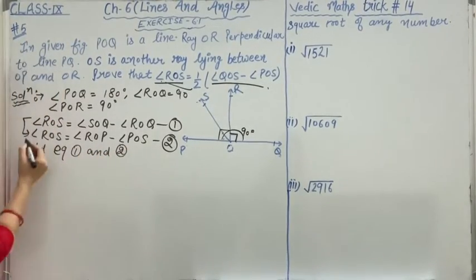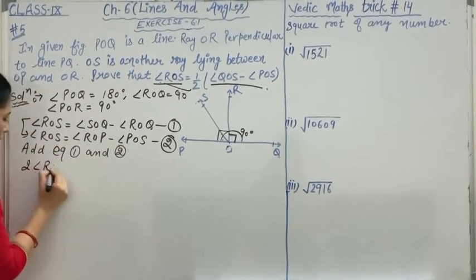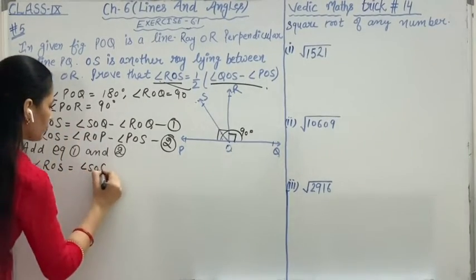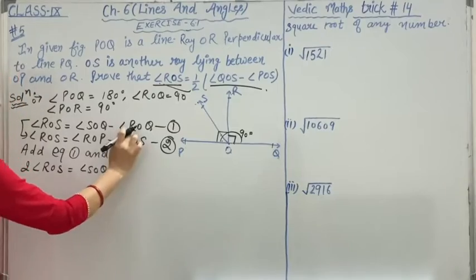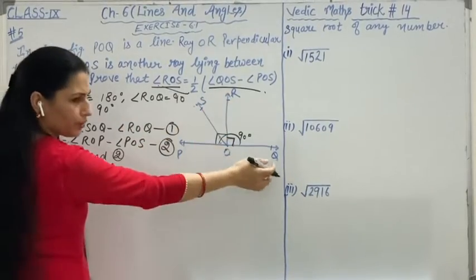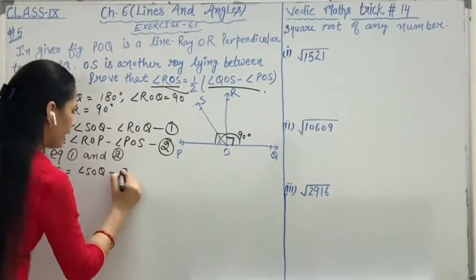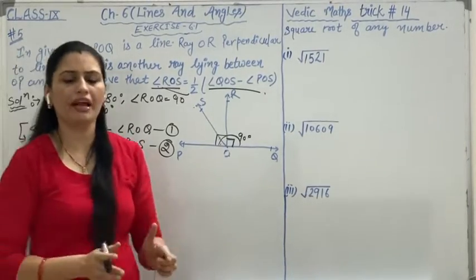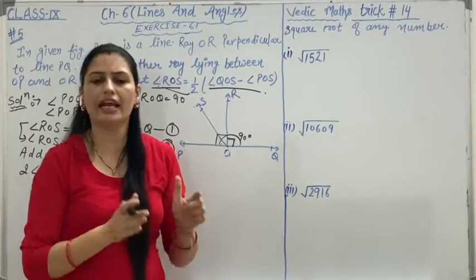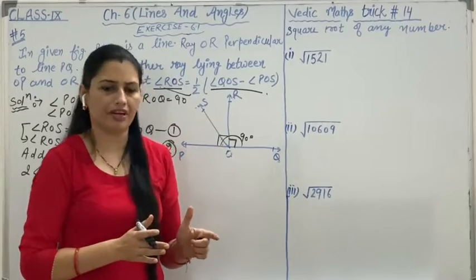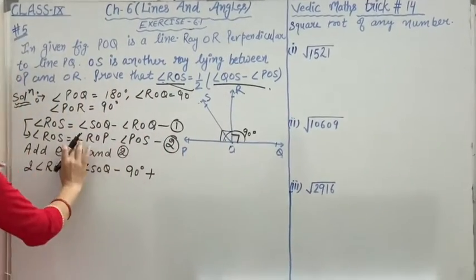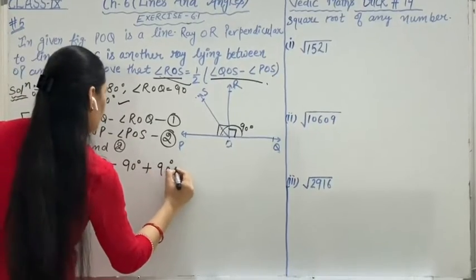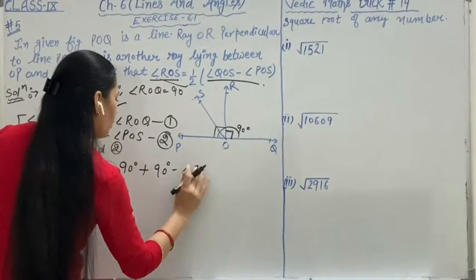What we will get? 2 times angle ROS equals angle SOQ minus angle ROQ, which is 90 degrees, minus 90 degrees plus, when we add 2 equations, we add right hand side plus right hand side and left hand side plus left hand side. So we add angle ROP, which is also 90 degrees, minus angle POS.